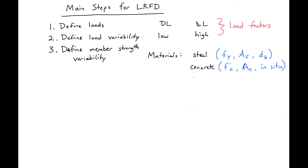We'll also have some geometric variability, which relates to member sizes and dimensions. Things won't get built exactly as designed — there's always some tolerance for how large a member is and where bars are placed. We can also have analytical variability, which is the discrepancy between how we analyze our members and how they actually behave.